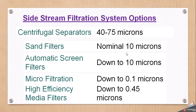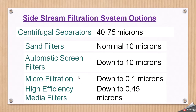There are several types of side stream filtration options, differing by filtration size. Centrifugal separators handle particles of 40 to 75 microns. Sand filters have a nominal rating of 10 microns. Automatic screen filters filter down to 10 microns. Micro filtration operates at around 0.1 microns. High efficiency media filters work down to 0.45 microns. Detailed discussion of each type will be covered in future videos.